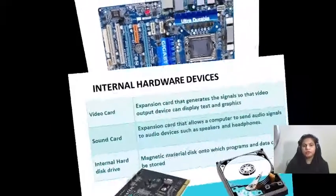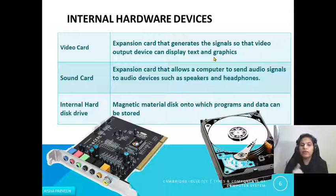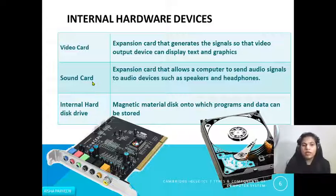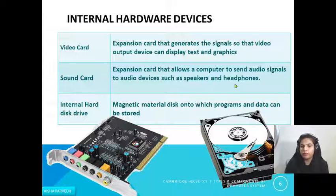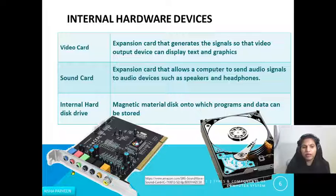Other internal hardware devices include the video card — an expansion card that generates a signal so that video output devices can display text and graphics. If you are able to view any video on your monitor or projector, the video card makes that possible. The sound card is also an expansion card that allows the computer to send audio signals to devices such as speakers and headphones. These cards are attached to your motherboard; ports on the sound card allow you to plug in headphones, speakers, or multiple devices.